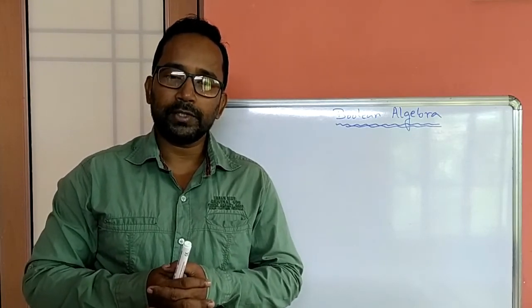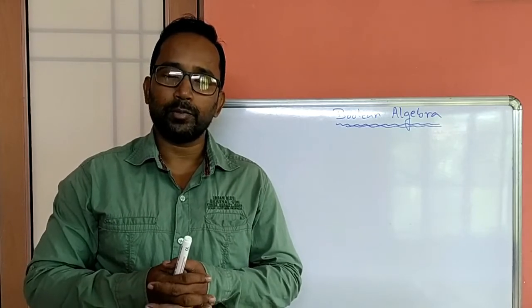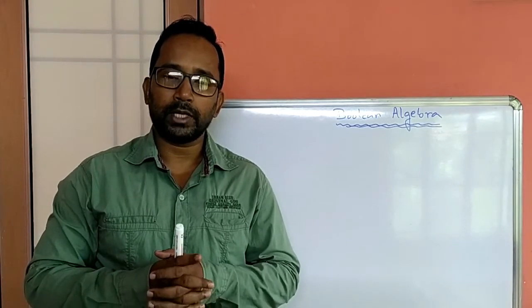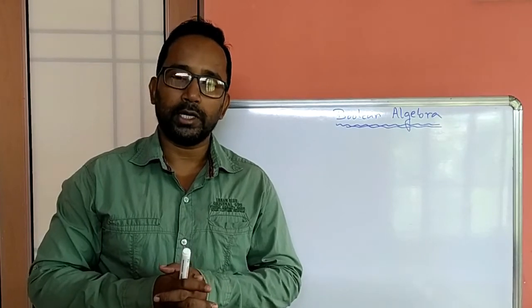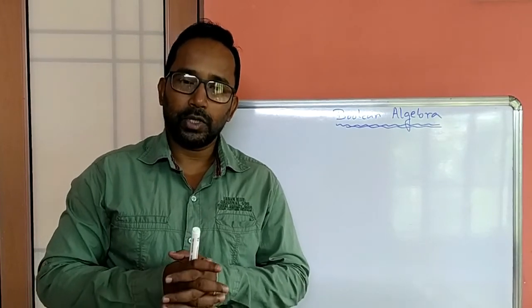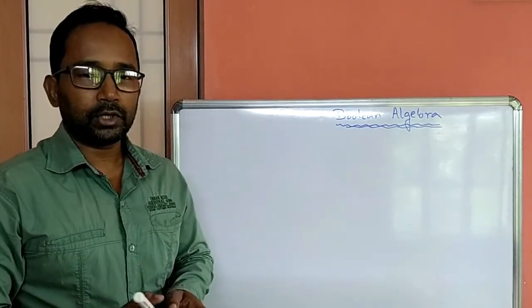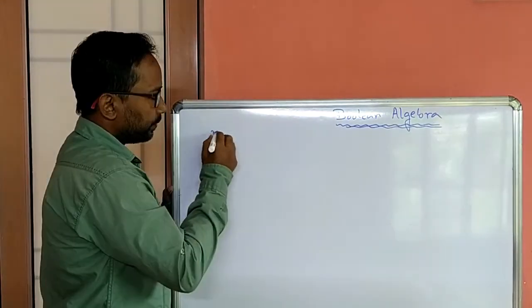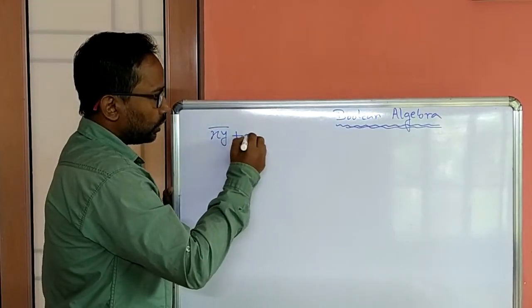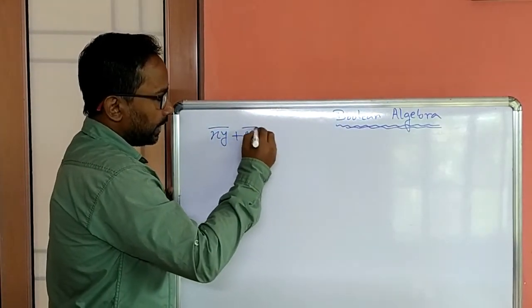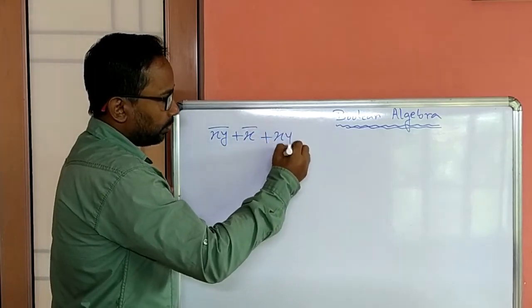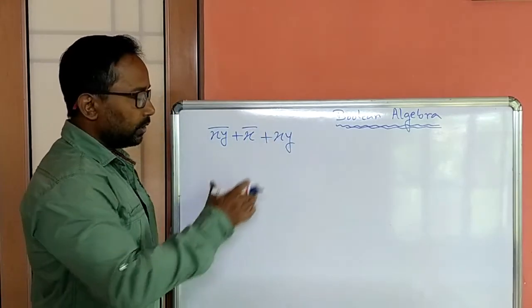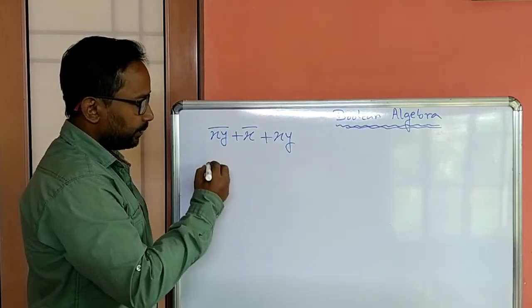So let's start with simplification of boolean expression using boolean laws. For that we have to remember the equivalence laws those we have already learned. Let's start with simplification of a boolean expression: xy whole not plus x not plus xy. This is one boolean expression, we have to simplify this expression.